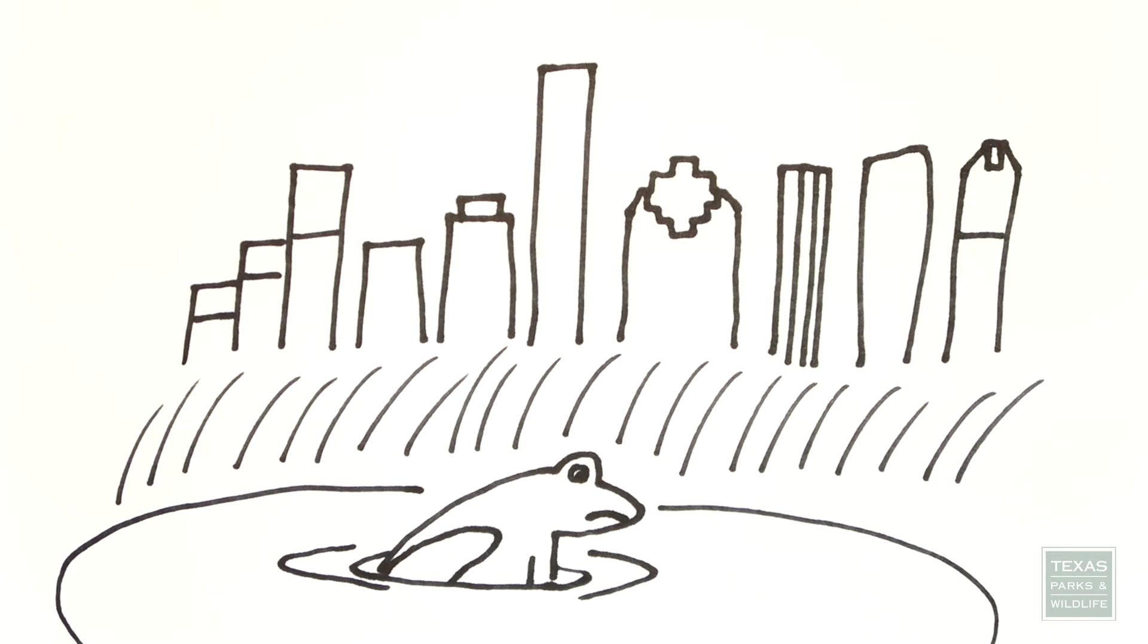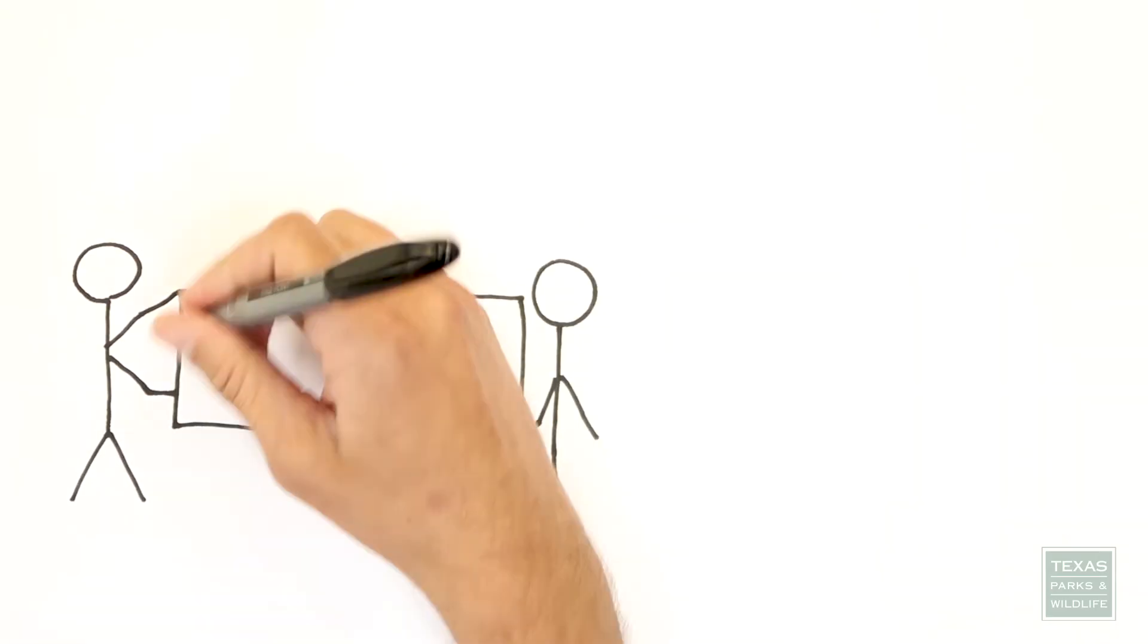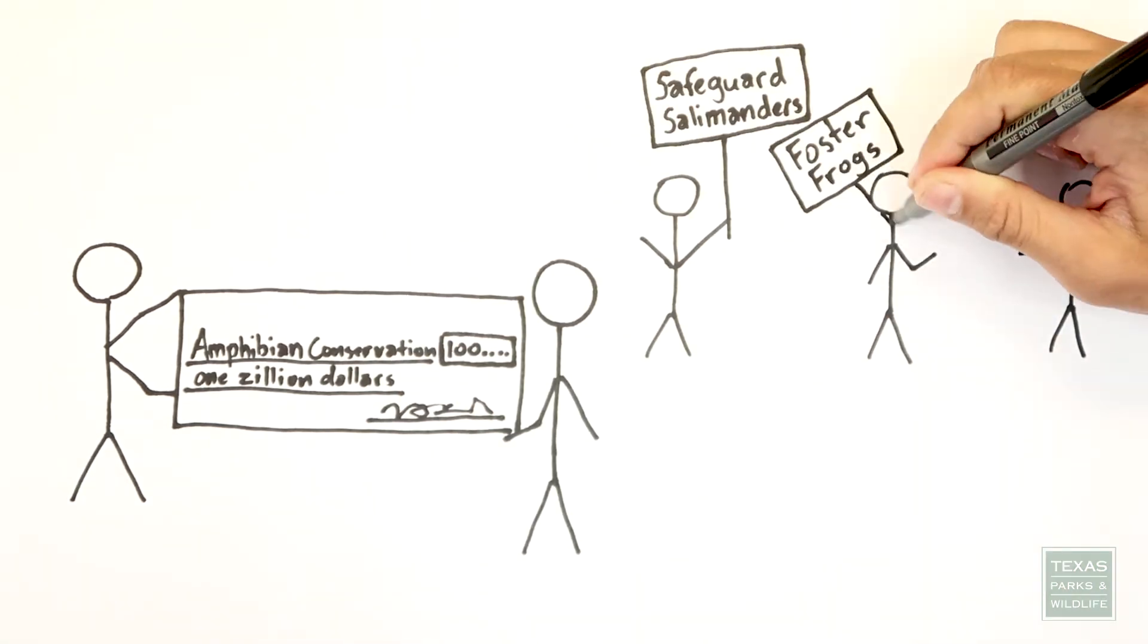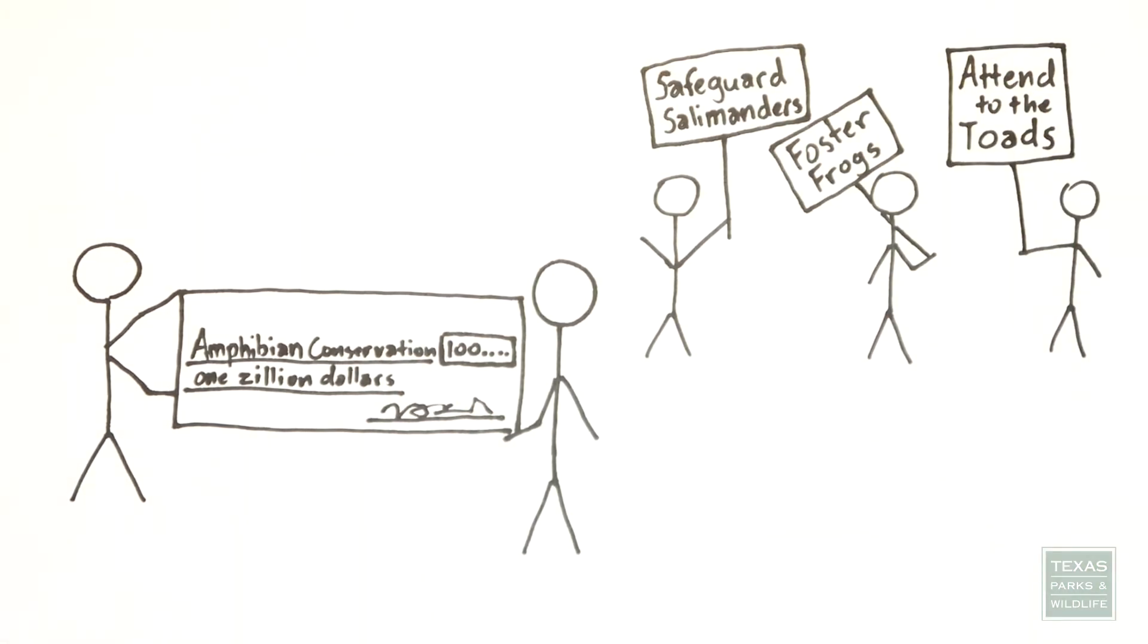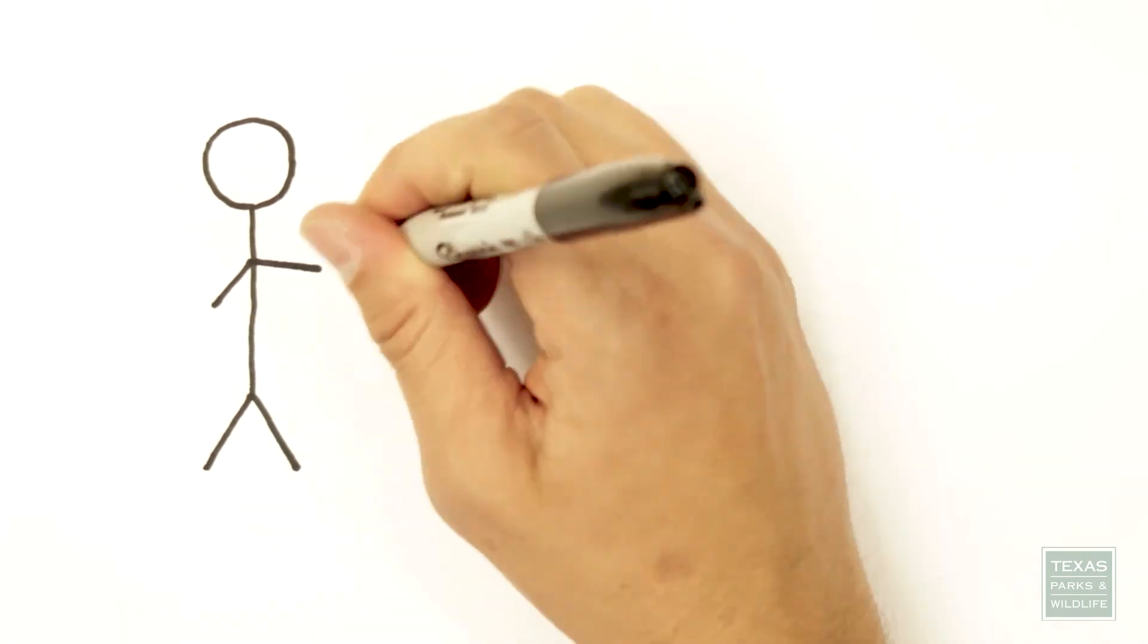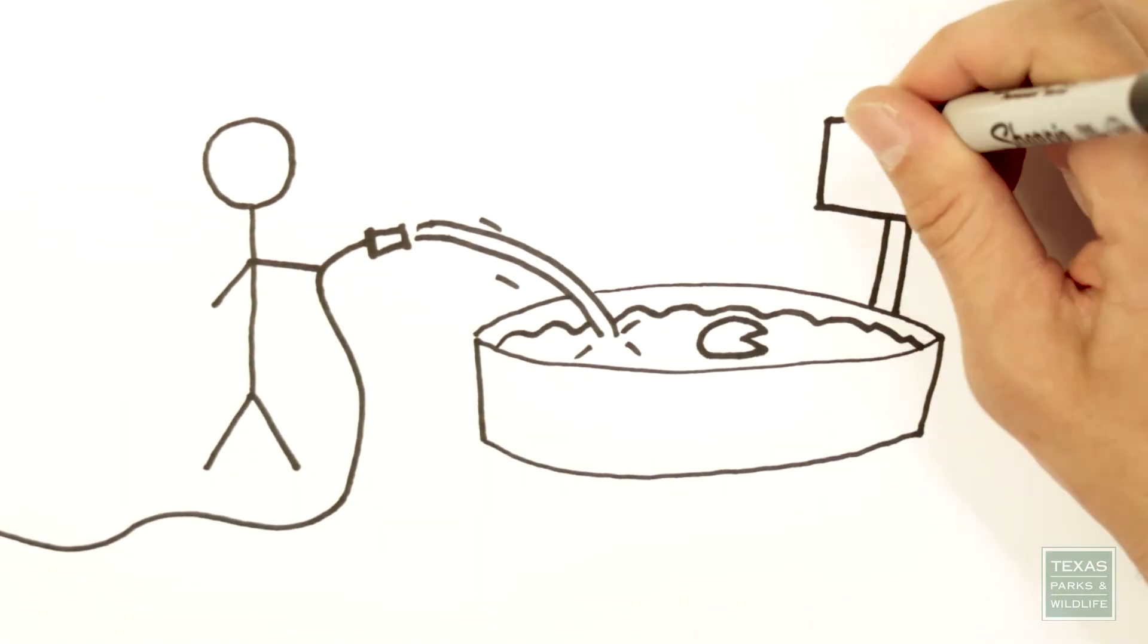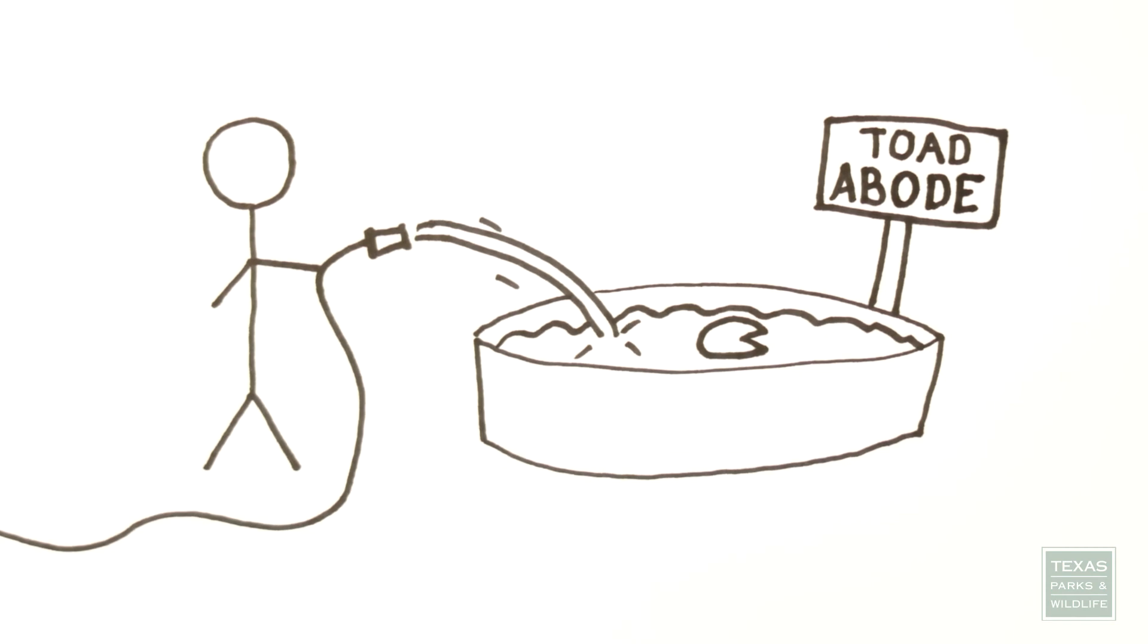So what can you do to help? Well, one thing you can do is become involved in protecting what's left of amphibian habitat by supporting conservation efforts. Contact your local master naturalist group to see how you can get involved. Also try making amphibian habitat near your home by adding ponds, natural pools, and fountains so that they can live alongside humans.